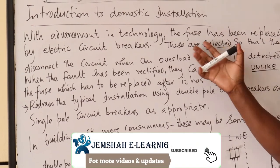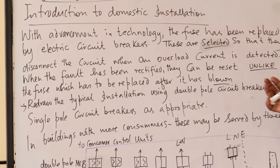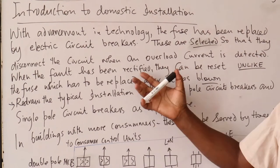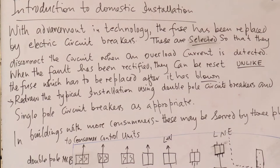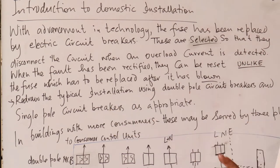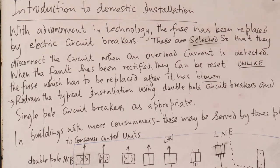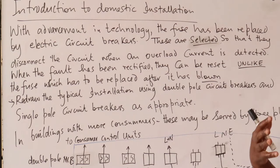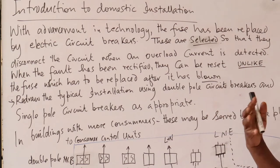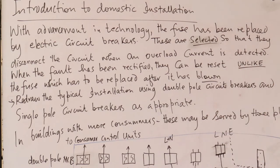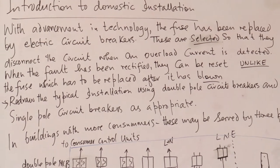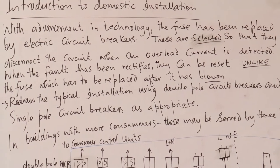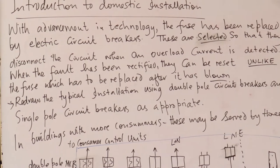The circuit breakers are selected so that they disconnect the circuit when an overload current is detected. Of course, when the fault has been rectified, they can be reset, unlike the fuse which has to be replaced. So the MCB is a more economical device than the fuse.